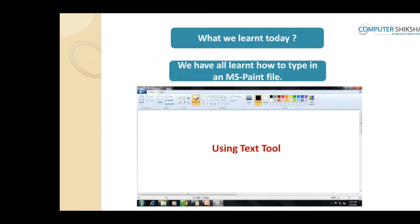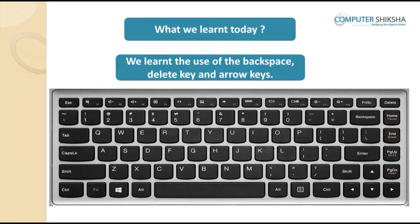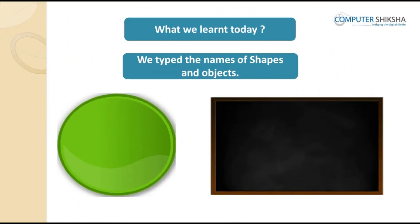In today's class, we have all learned how to type in an MS Paint file. You also learned how to use Backspace, Delete and the arrow keys. Today we typed out names of fruits, numbers and objects. Thank you.